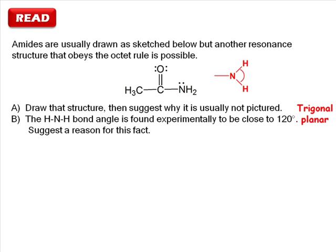Once you've read the question, summarize your plan. For part A, we need to draw the other resonance structures, including all lone pairs and charges, and then determine why it's not normally pictured.